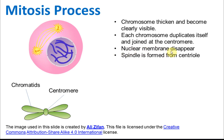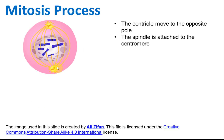The nuclear membrane then disappears. A spindle is formed from the centrioles — the centrioles form these hair-like strings called the spindle. After that, the centrioles move to the two poles of the cell, and at the same time the spindles move toward the centromere of each chromosome, where the spindle is attached to the centromere.